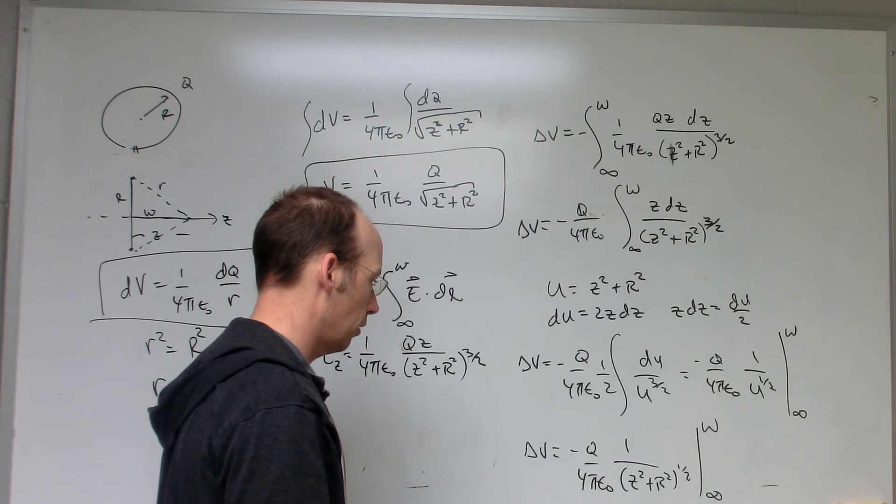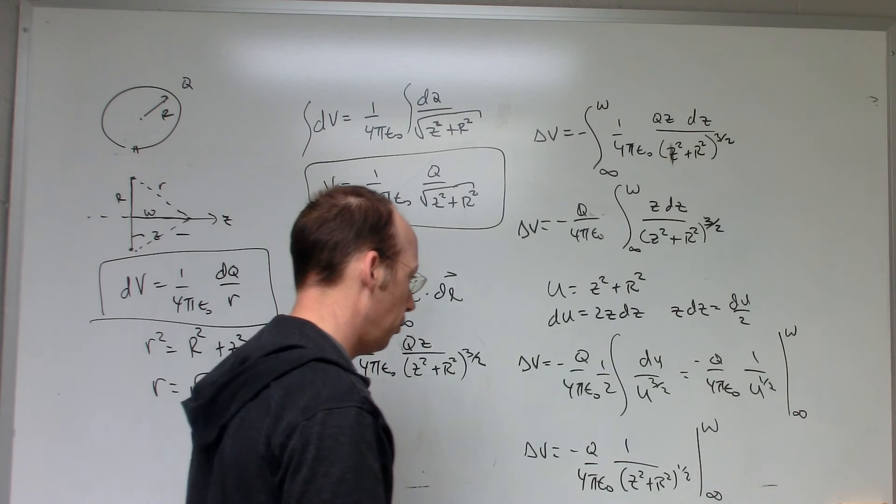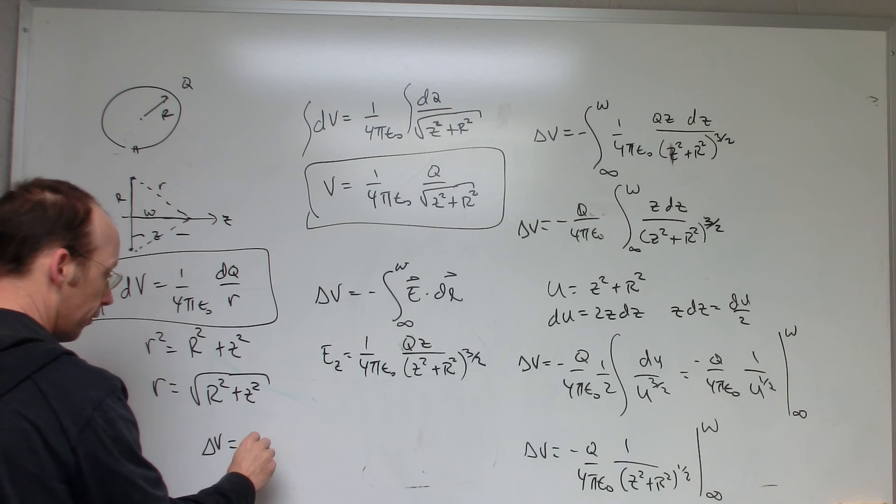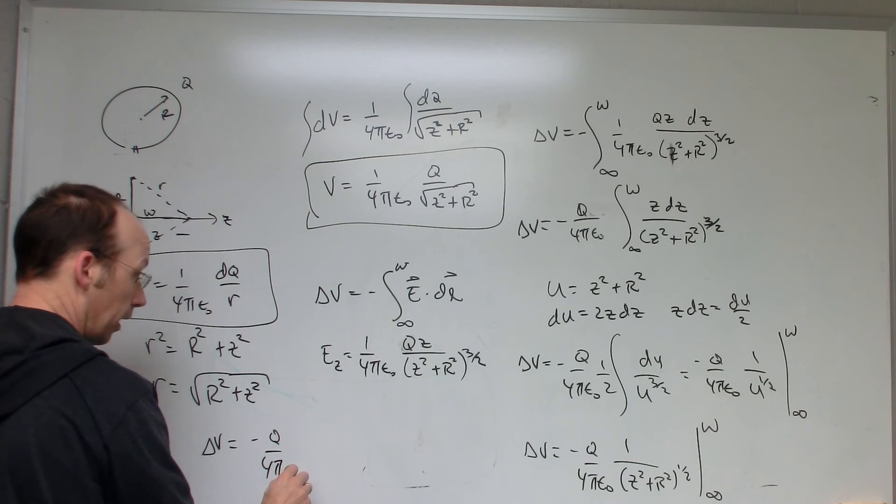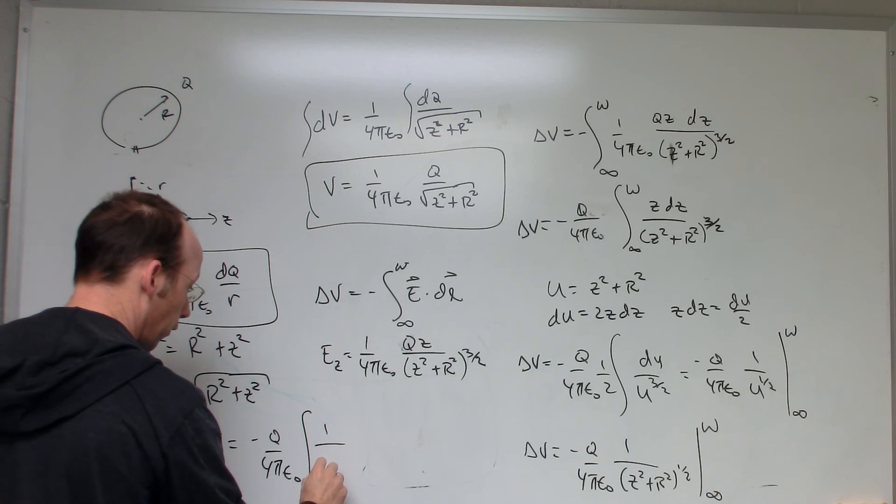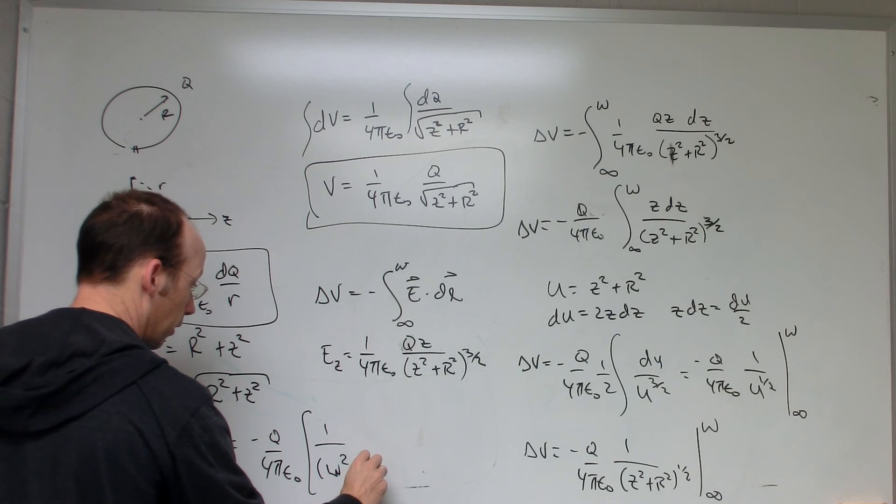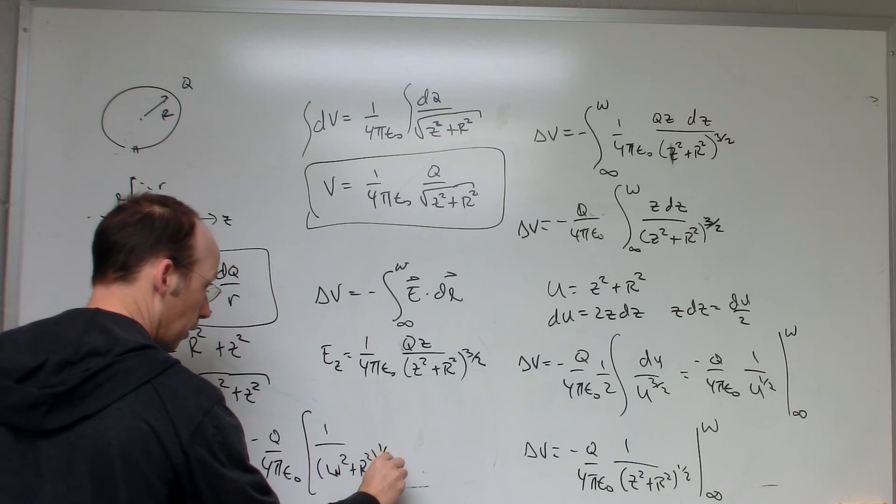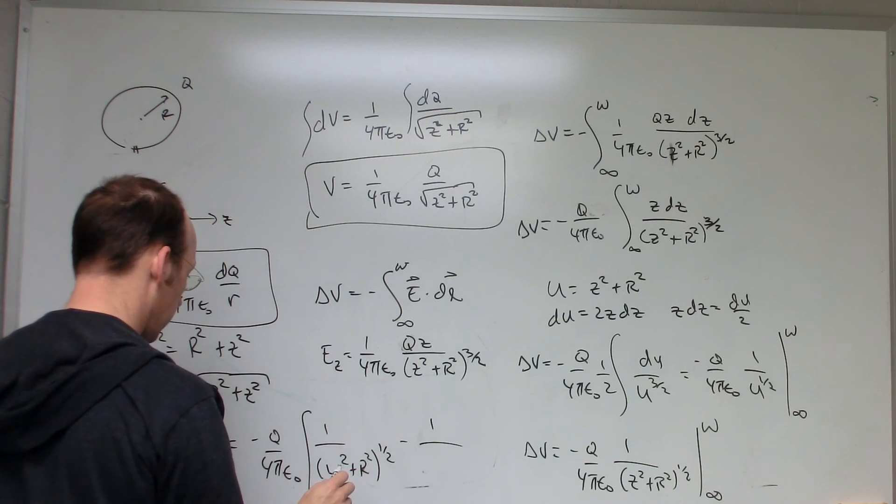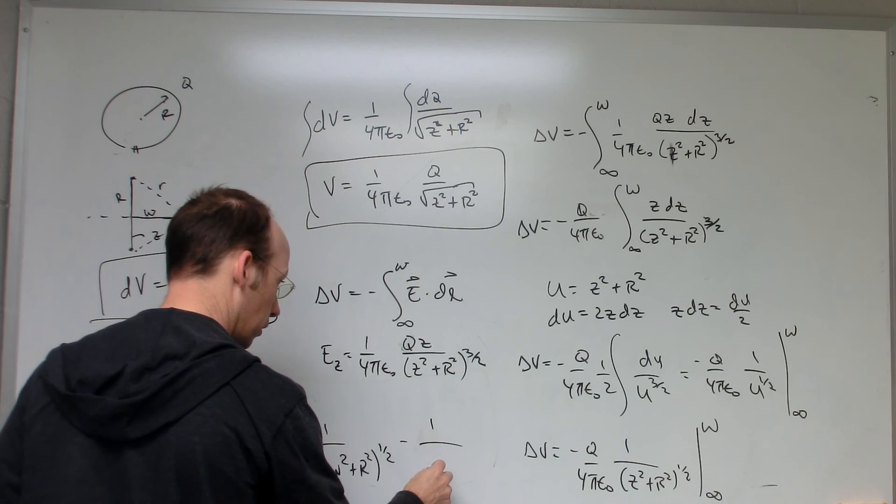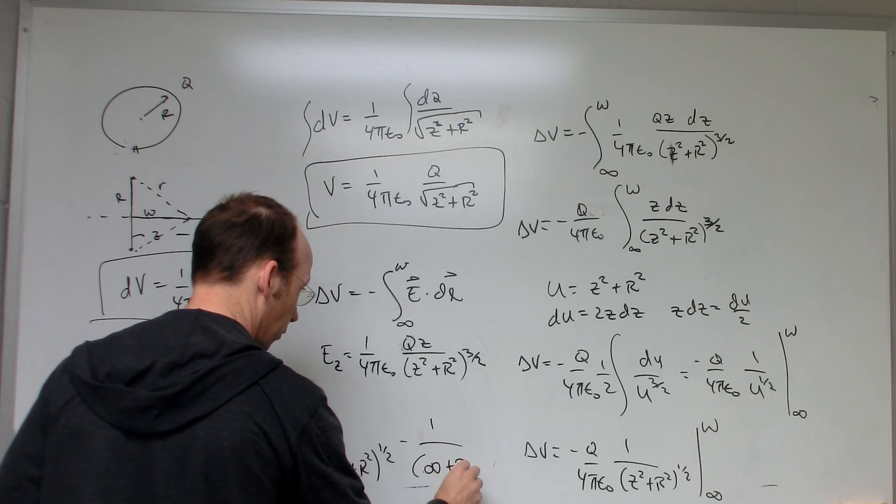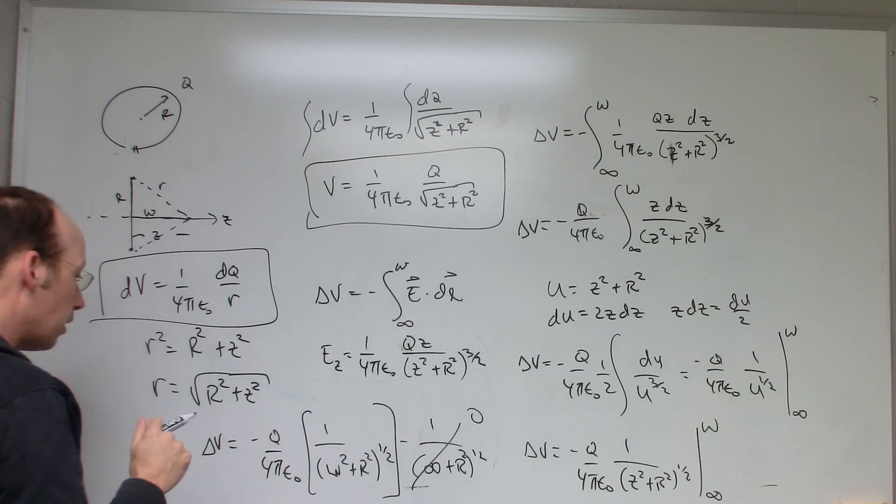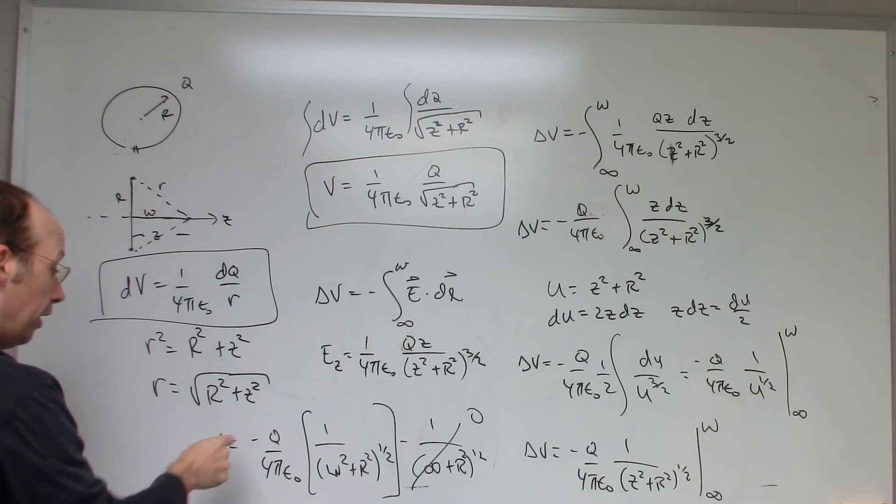This looks a little messy. Seems like I did something wrong. Let's just do it. Delta V equals negative Q over 4π epsilon not, and then I get the w term, 1 over w squared plus R squared square root minus 1 over infinity squared plus R squared to the one half. This term goes to zero. But see, now I have a minus sign. But that's my right answer, right? Because that's the same thing with w except in terms of z.